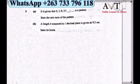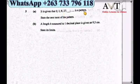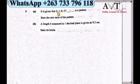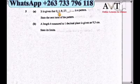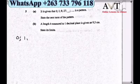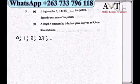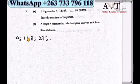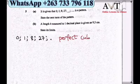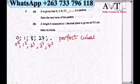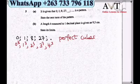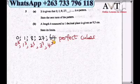Question 3a: Given the pattern 0, 1, 8, 27 — state the next term. These numbers are all perfect cubes: 0³=0, 1³=1, 2³=8, 3³=27. The pattern follows perfect cubes in order, so the next term must also be a perfect cube. 4³ = 64, so 64 is our answer.